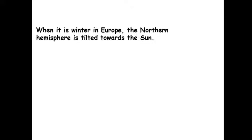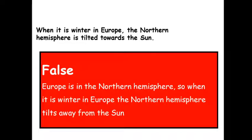When it's winter in Europe, the Northern Hemisphere is tilted towards the sun — true or false? This one is false, because if it's winter in Europe that means the Northern Hemisphere is tilted away from the sun.